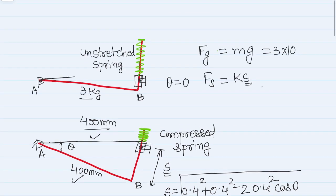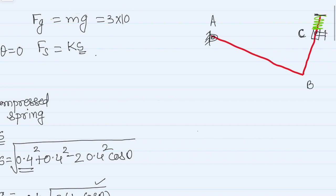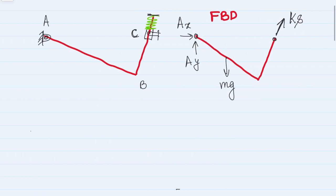Once I have the spring force and the gravitational force, I will make the free body diagram of the system. This is a pin joint, meaning there are two reaction forces. I am not taking the reaction force at point C into account because those forces are not of interest when doing the virtual displacement — this point is considered fixed, as is point A, and fixed points do not contribute to virtual work.